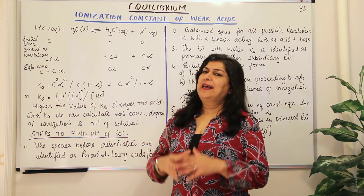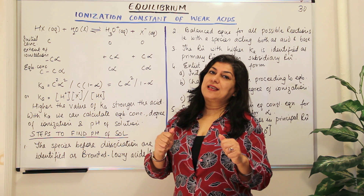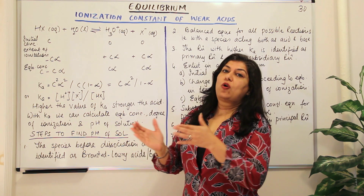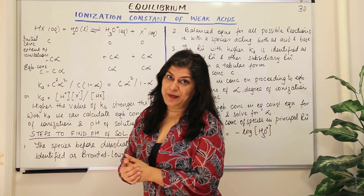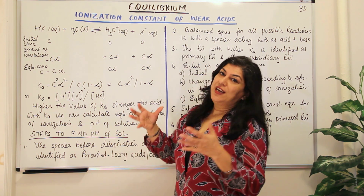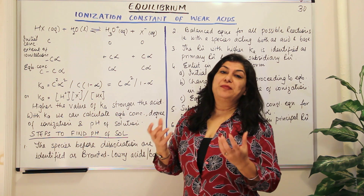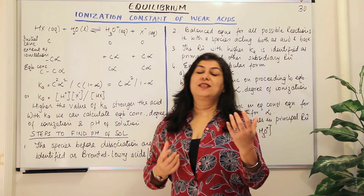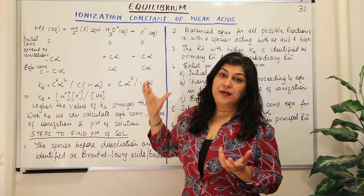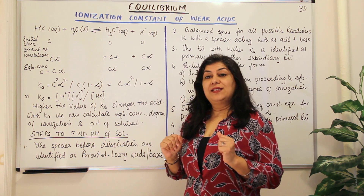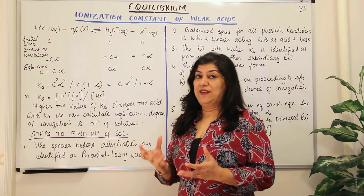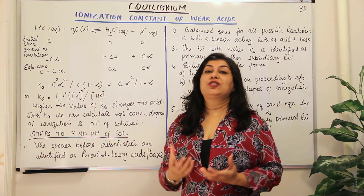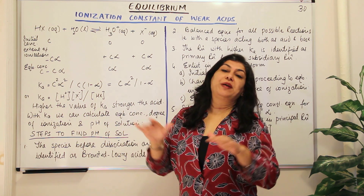Weak acids dissociate only partially, and this partial dissociation leads to the formation or establishment of an equilibrium. Therefore it is possible to calculate the equilibrium concentrations and the equilibrium constant for such a reaction mixture. And since it's an acid we are talking of, it is possible to find out the pH of such a solution when equilibrium has been established.